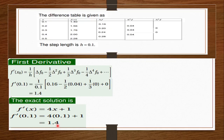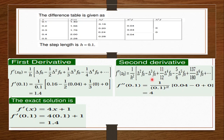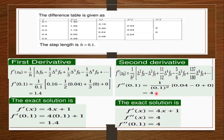For the second derivative, it has its own formula. We put in h = 0.1, Δ²f₀ = 0.04 (top values), and Δ³f₀ = 0 — all the rest are zeros since zero minus zero is zero. So we get (1/0.1²) × (0.04 minus the zeros), which gives us 4. The exact solution for the second derivative of that equation is also 4, so the approximation matches the exact solution perfectly — the margin of error is zero.